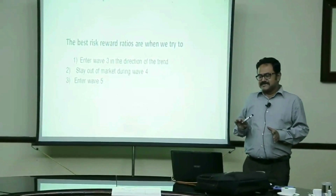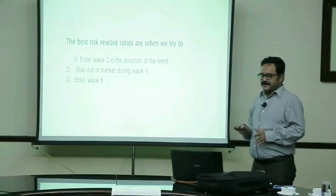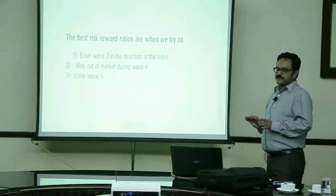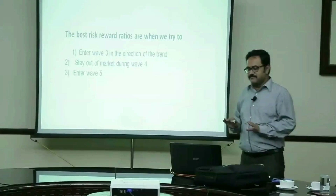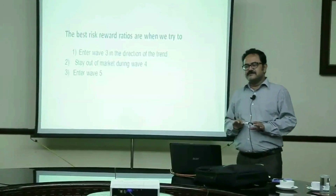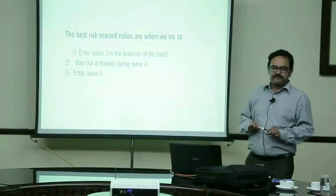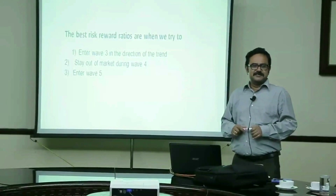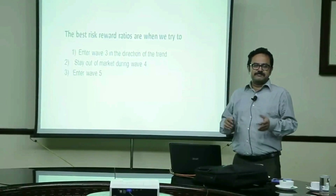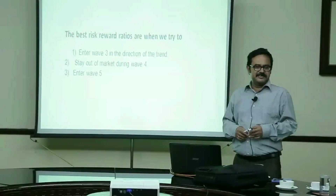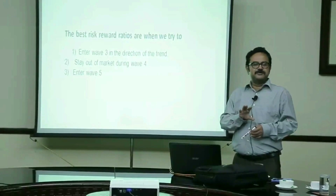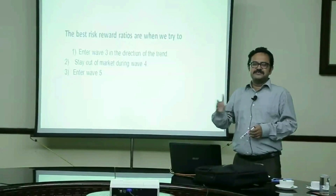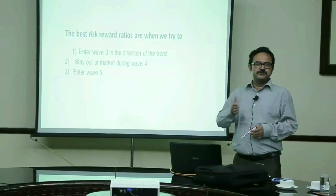The best risk-reward ratios are: enter wave 3 in the direction of the trade, stay out of the market during wave 4, and enter wave 5. These lines were given by Perry Kaufman, who wrote a book in 1998 called Trading Systems and Methods. He also studied Elliott Wave, probably in a much bigger way than I did. These were the only three points he could come up with which are actually tradable and which actually put the risk-reward ratio to your advantage.